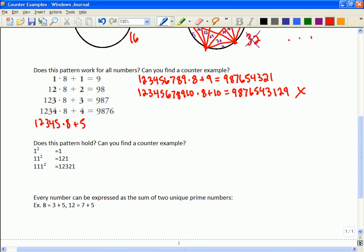How about this one? Here's an interesting pattern: 1 squared is 1, 11 squared is 121, 111 squared is 12321. Does that keep working or can you find a counter example?